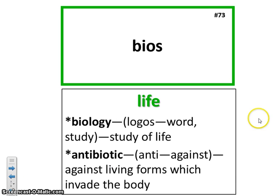The next root is bios. It means life. Biology is the study of life. An antibiotic is something that fights against something invading the body. Symbiosis, for example, means two different species that depend on each other. There's a relationship of two different types of life.